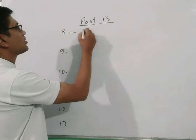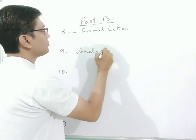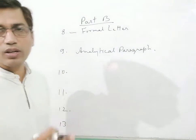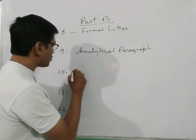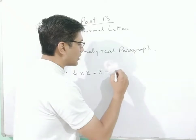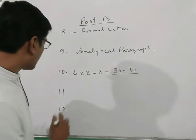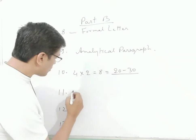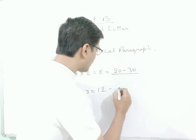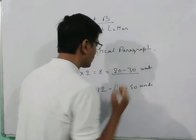Question number 8 is about formal letters and question number 9 is the analytical paragraph. Question number 10 has short answer or very short answer type questions from literature — four questions of two marks each, amounting to eight marks in total, answered in 20 to 30 words. Question number 11 has four questions of three marks each, giving 12 marks in total, with answers written in 40 to 50 words.